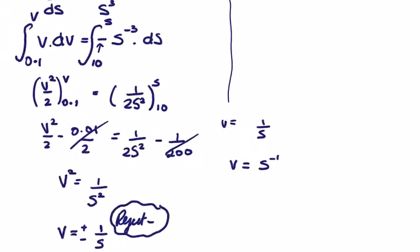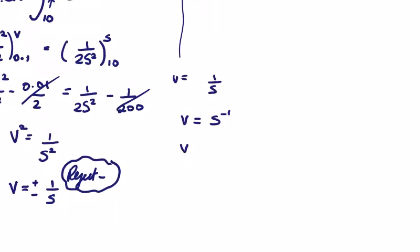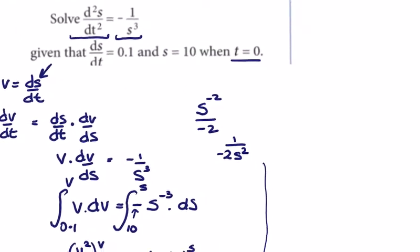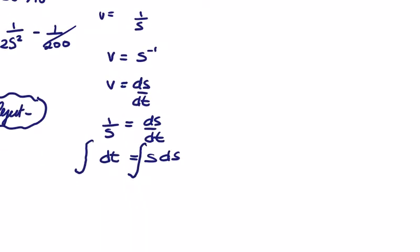So what else do we have? We have v is equal to ds/dt. So we take 1 over s, maybe it might be easier, is equal to ds/dt. So dt is equal to s ds and we integrate these guys. Our values: s is 10, t is 0. t is 0, s is 10. Probably should be a bit neater here.